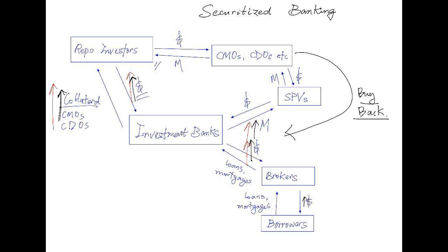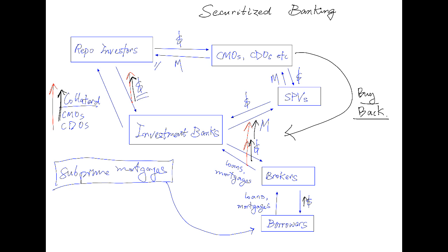These investment banks and commercial banks were becoming so profitable with this shadow banking and securitized banking system that they ran out of mortgages to securitize and started accepting subprime mortgages. These subprime mortgages were brought into the cycle to securitize and ended up being a major part of the collateral, which led to the repo market and the short-term interbank market shutting down.